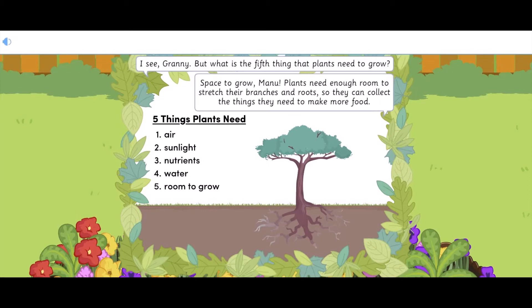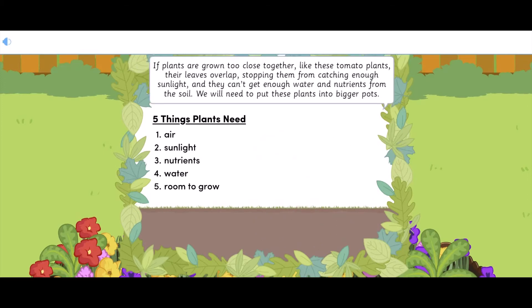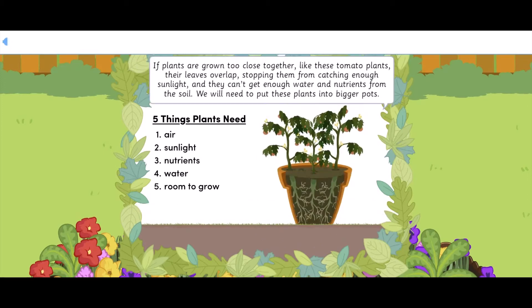Space to grow, Manu. Plants need enough room to stretch their branches and roots so they can collect the things they need to make more food. If plants are grown too close together, like these tomato plants, their leaves overlap, stopping them from catching enough sunlight and they can't get enough water and nutrients from the soil. We will need to put these plants into bigger pots.